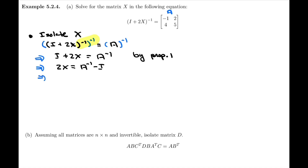That allows me to isolate X. I complete that by doing 2X equals A inverse minus I. And finally, just by using scalar properties, X equals one half of A inverse minus I. So I've completed the step of isolating X. Now we need A inverse, so let's find that.